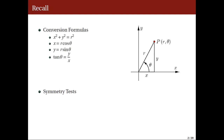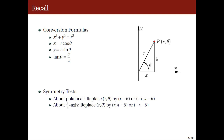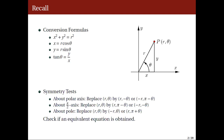In testing symmetries of polar curves, we can do the following. In testing symmetry about the polar axis, we can replace r, theta by r, negative theta or negative r, pi minus theta. In testing symmetry about the pi over 2 axis, we can replace r, theta by r, pi minus theta or negative r, negative theta. And in testing symmetry about the pole, we can replace r, theta by negative r, theta or r, pi plus theta. In using these tests, we check if an equivalent equation is obtained.